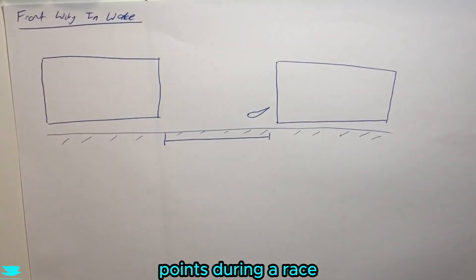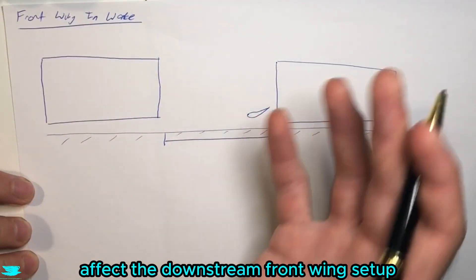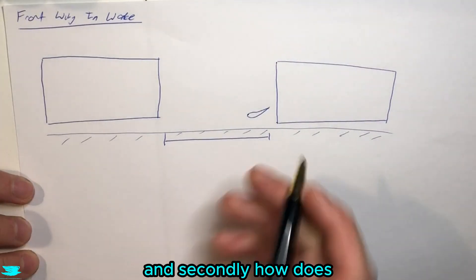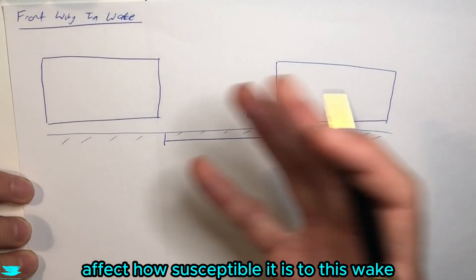So how does the wake of an upstream car affect the downstream front wing setup? And secondly, how does the distance from the ground of this front wing setup affect how susceptible it is to this wake?